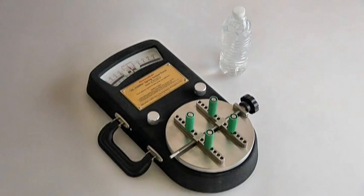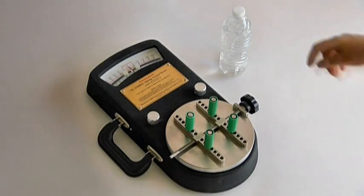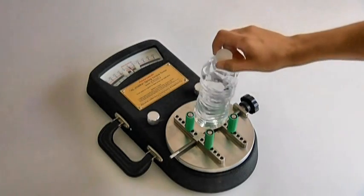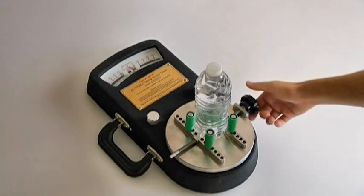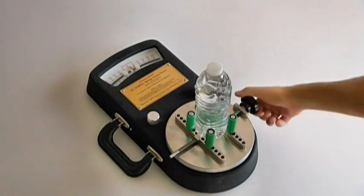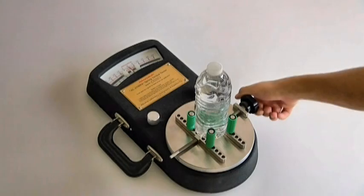The Advanced Lab torque tester measures the torque required to open or close a cap on a container. The container is placed on the platform and secured between the four bumpers. The white markers on the gauge are then set to zero.